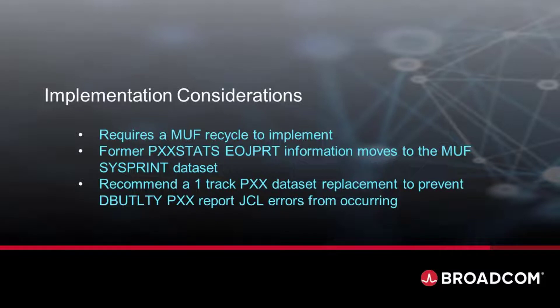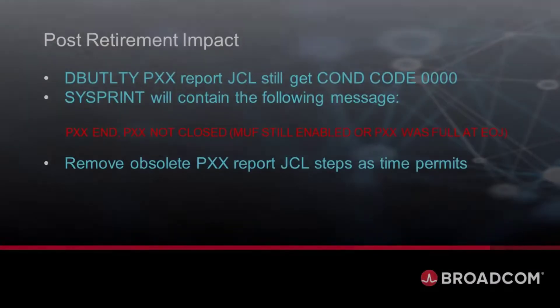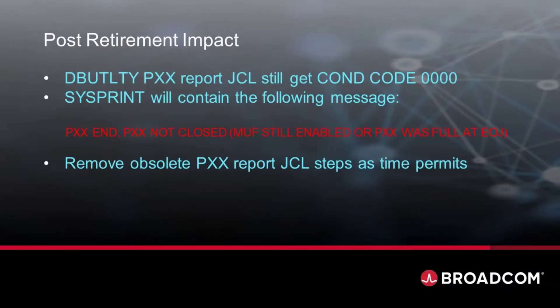Existing DB Utility Report Area PXX JCL is affected if the PXX no longer exists, so it's recommended a one-track PXX dataset replacement be allocated in order for the JCL to not get a JCL error for a missing dataset. DB Utility Report Area PXX jobs that run on that one-track PXX dataset replacement will still get a condition code 0. However, the only thing that will be in their SysPrint is the message you see on the slide. The obsolete PXX report or job steps can be removed after the fact as time permits.